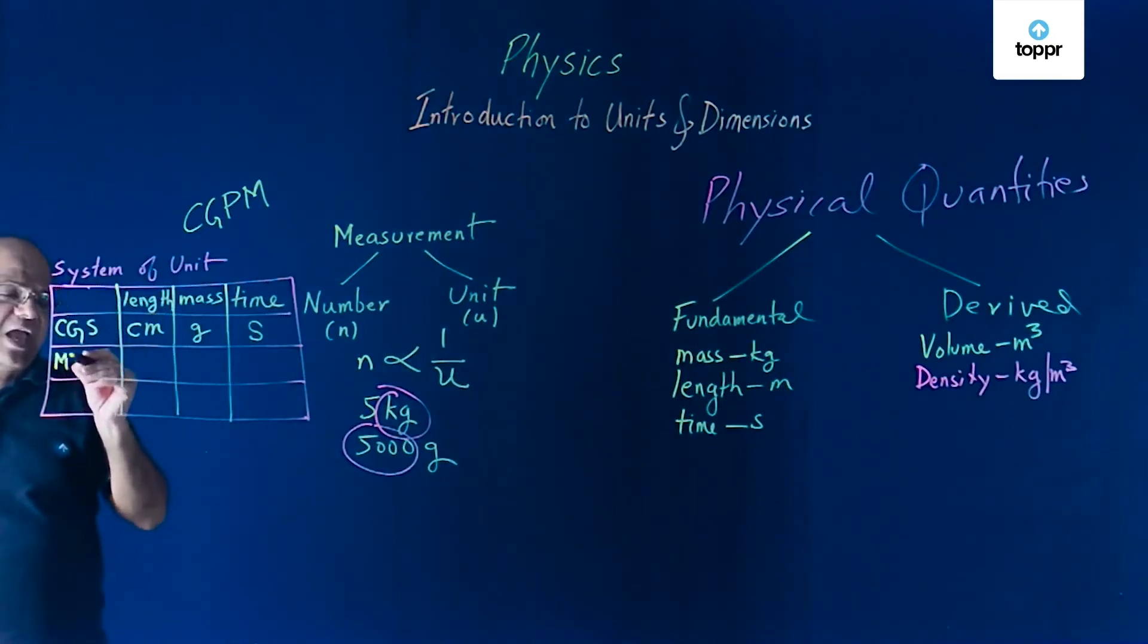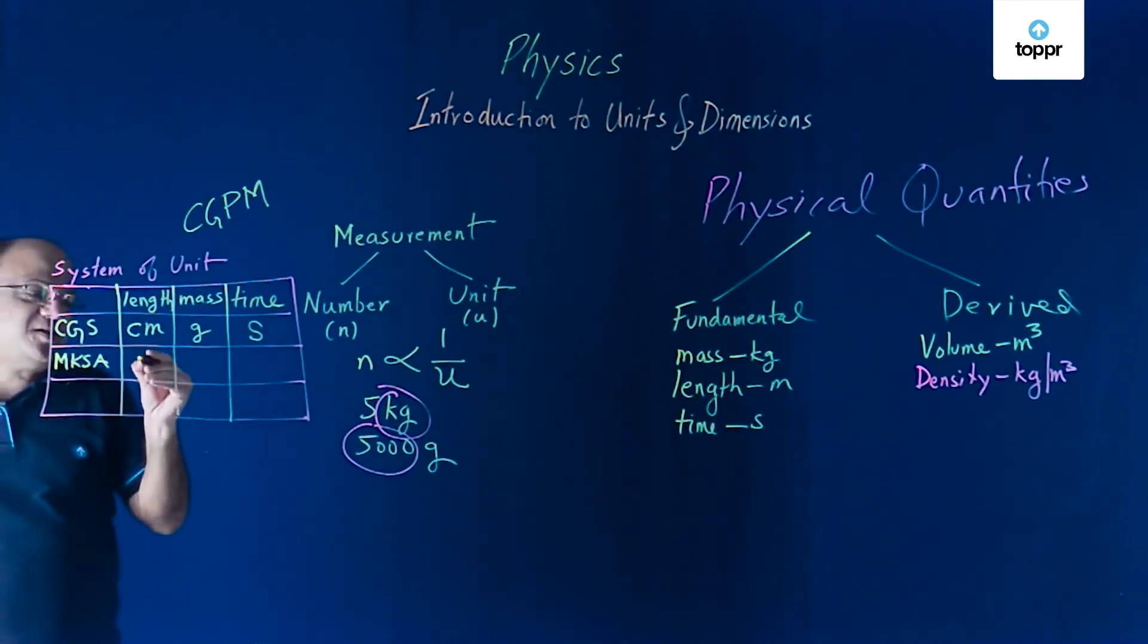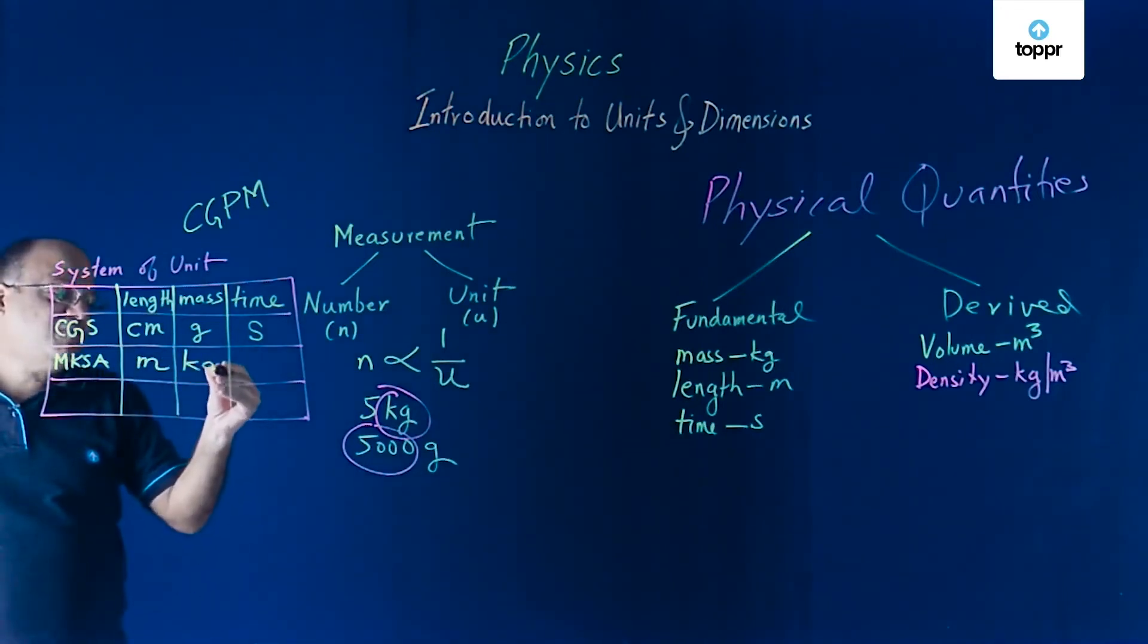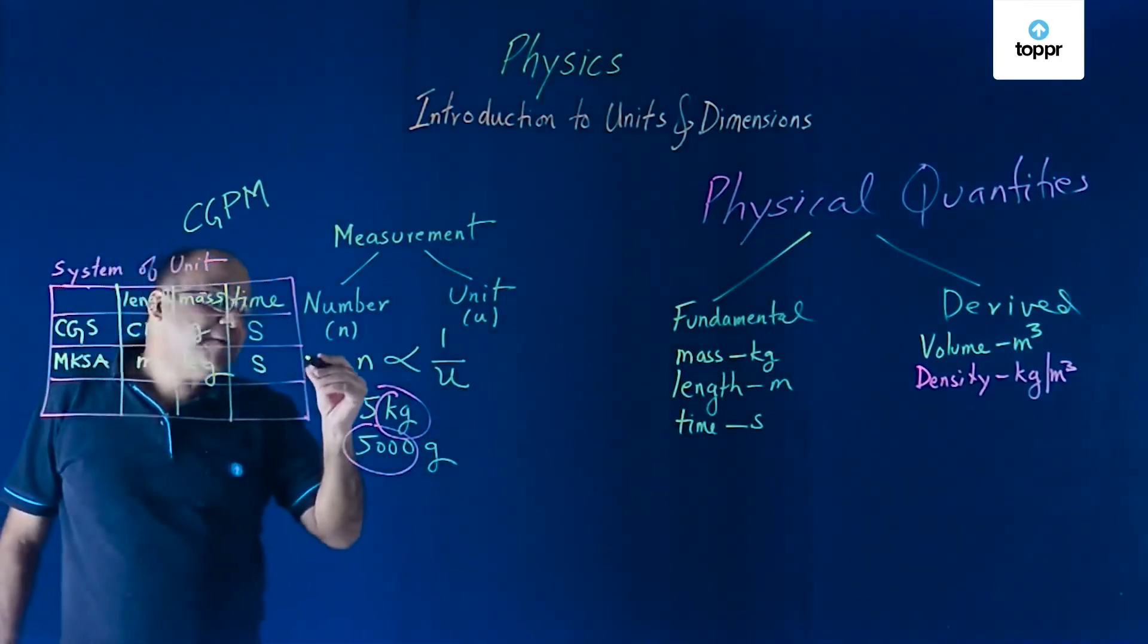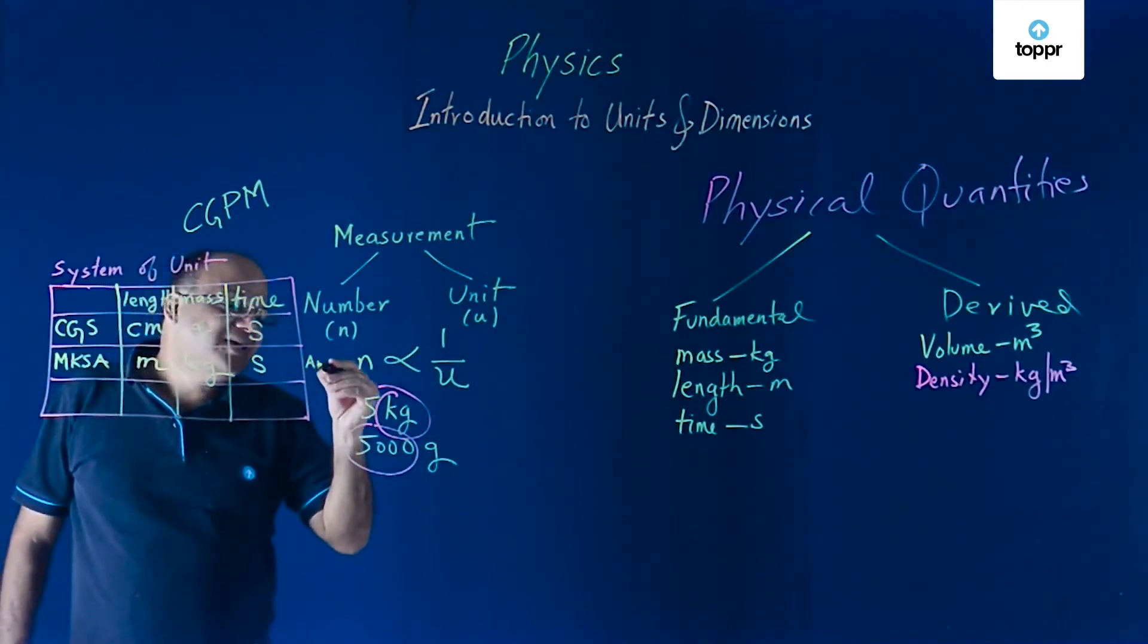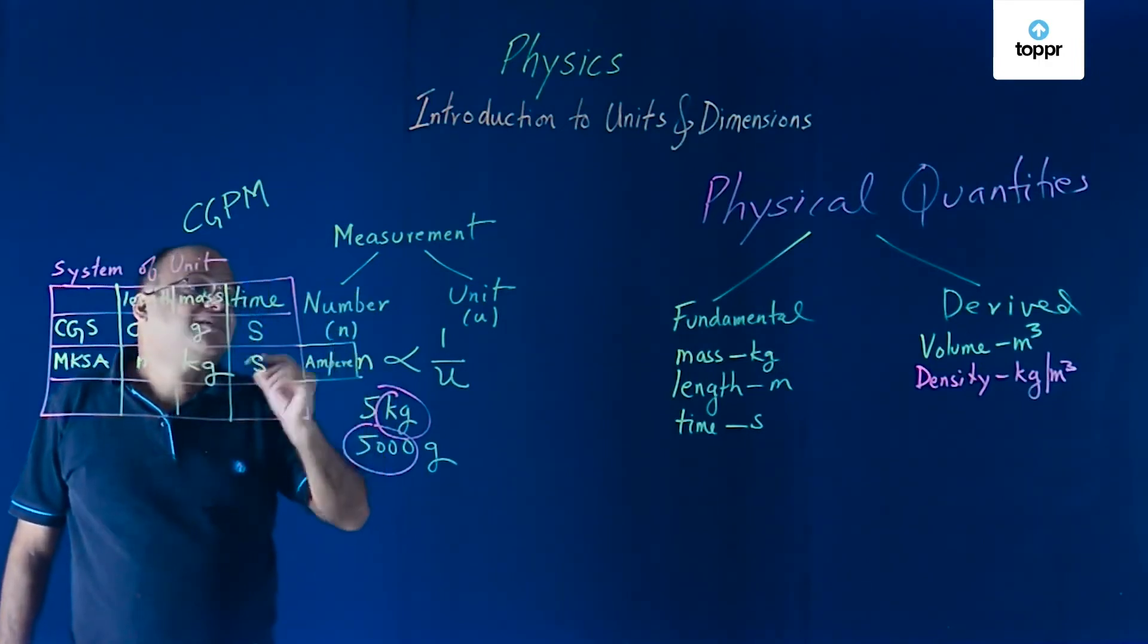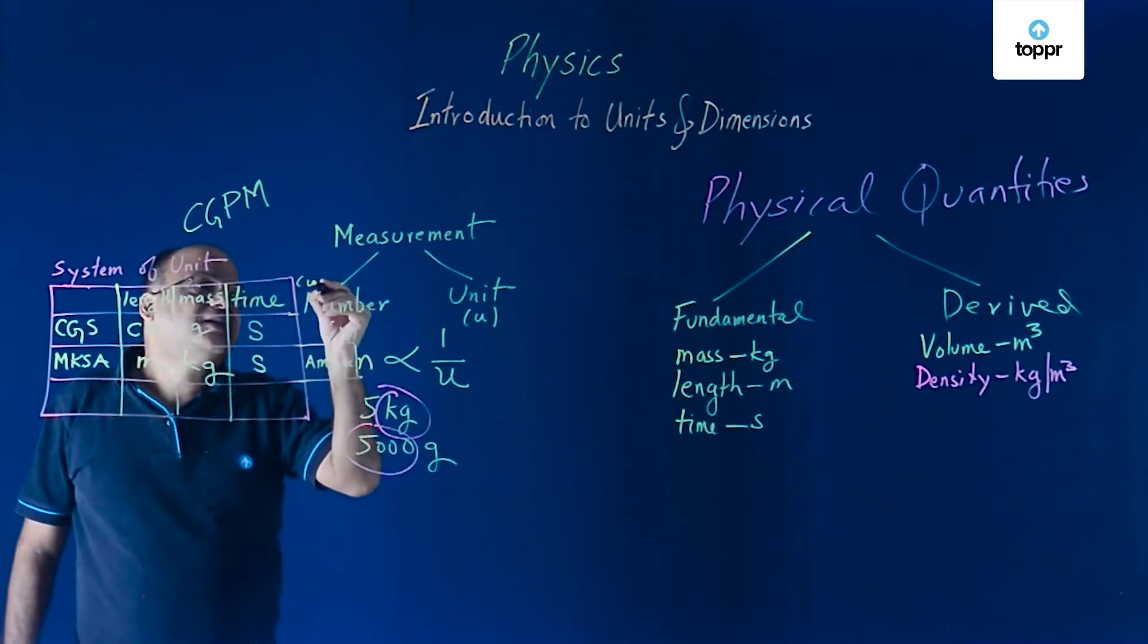After CGS, you have got a system of units called MKSA. M stands for meter, unit of length. K stands for kg, unit of mass. S stands for second, unit of time. What is this A? A stands for ampere, that is unit of electric current. So here we can have one more column and that is electric current, current.